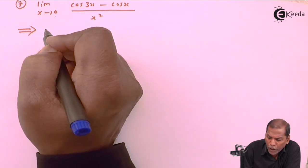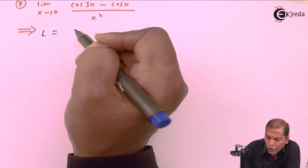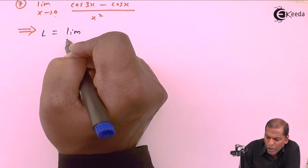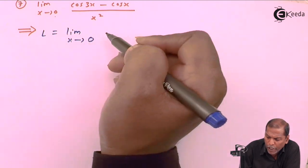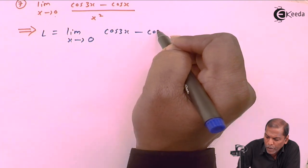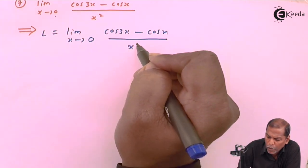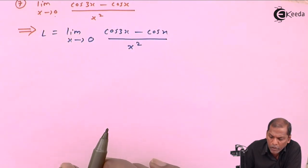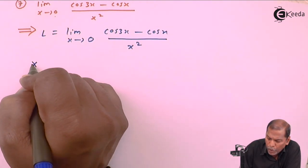Let's see the solution. First of all, given problem we denote as L, so L is equal to limit x tends to 0, cos of 3x minus cos x whole thing divided by x square. Now here we use